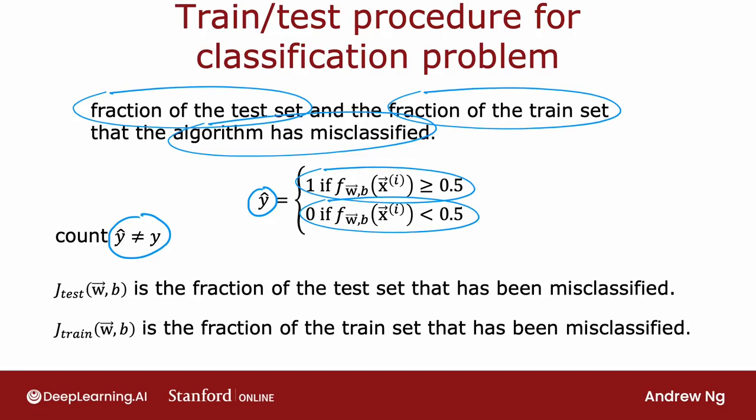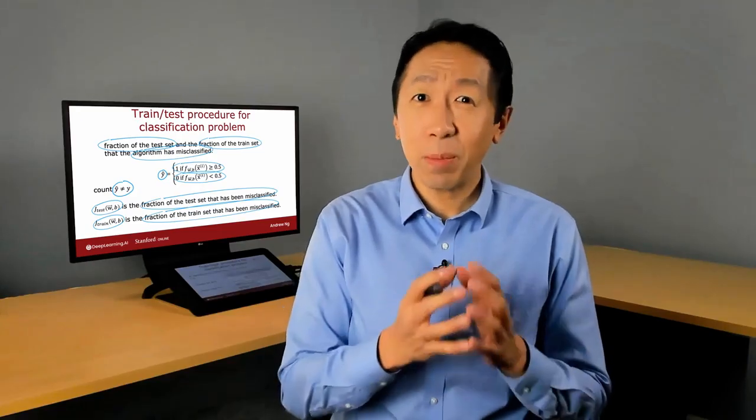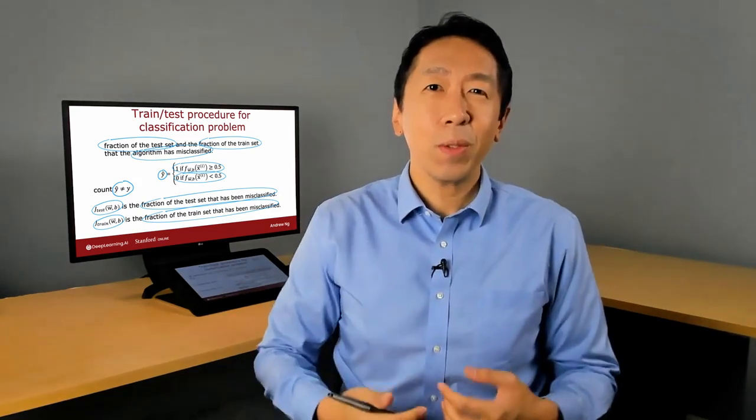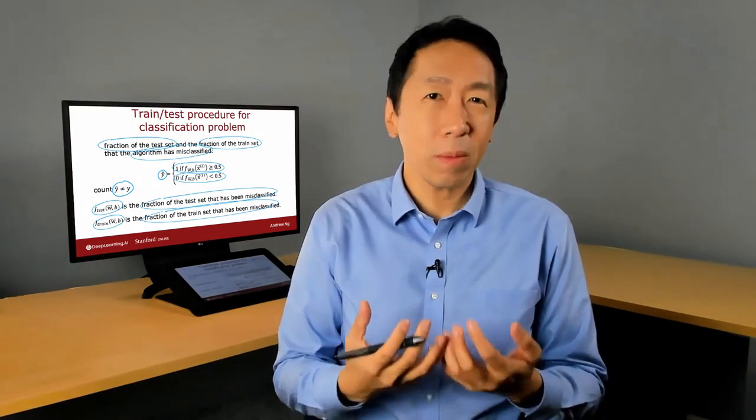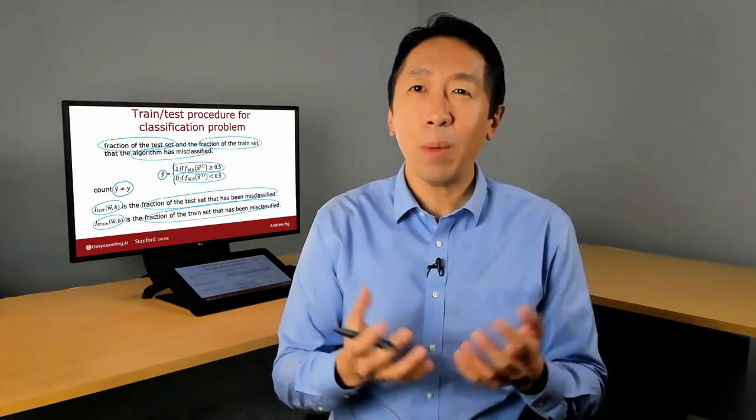So concretely, if you were classifying handwritten digits, 0 or 1, binary classification, then j-test would be the fraction of that test set where 0 was classified as 1 or 1 classified as 0. And similarly, j-train is the fraction of the training set that has been misclassified. Taking a dataset and splitting it into a training set and a separate test set gives you a way to systematically evaluate how well your learning algorithm is doing. By computing both j-test and j-train, you can now measure how well it's doing on the test set and on the training set.